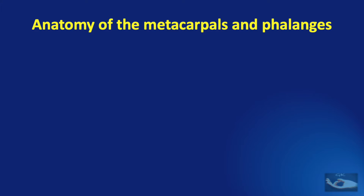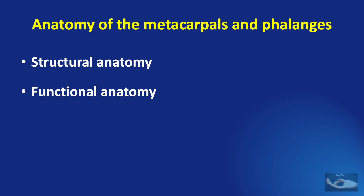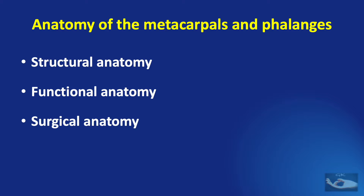In this video, we are going to learn about the anatomy of the metacarpals and phalanges — not just structural anatomy, but also functional and surgical anatomy. Under structural anatomy, we shall learn about the parts of the bone, the articulations both proximally and distally, the attachments — that is the muscles, tendons and ligaments — the blood supply, and the ossification pattern.